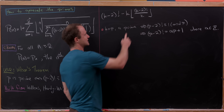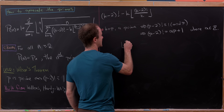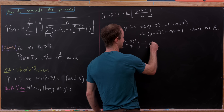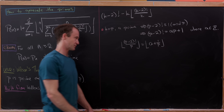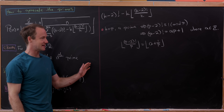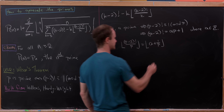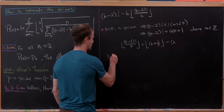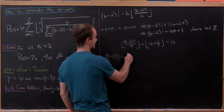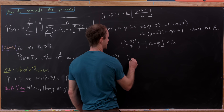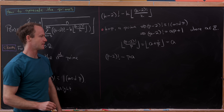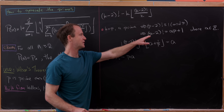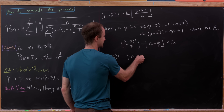Now let's look at (p minus 2) factorial over p — we're taking the floor of that. Using our expression for (p minus 2) factorial, that's the floor of a plus 1 over p. Since a is an integer and 1 over p doesn't reach the next integer, the floor is simply a. So our expression becomes (p minus 2) factorial minus p times a, which, rearranging, equals 1.